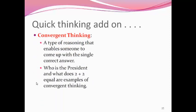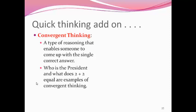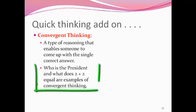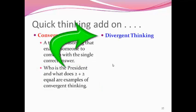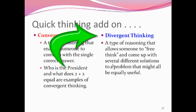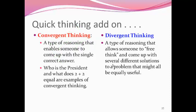A quick add-on: there are a couple of different types of thinking to briefly mention. Convergent thinking enables somebody to come up with one single correct answer — we do this a lot in school. For example, who is the president, or what does 2 plus 2 equal — there's only one right answer and everybody should come up with the same answer. Divergent thinking is kind of the opposite: a type of reasoning that allows somebody to free-think and come up with many different solutions to a problem, all of which might be equally useful.